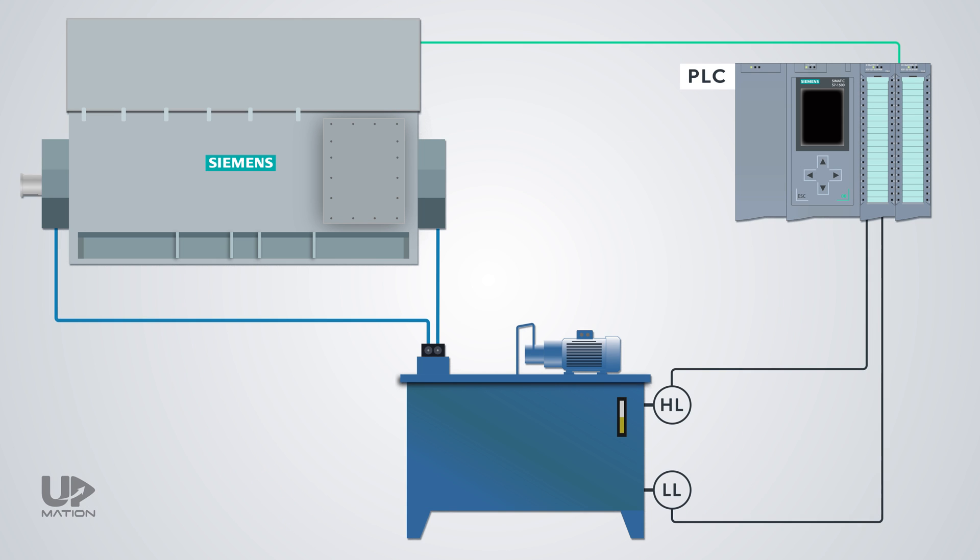As another example, consider this process in which the bearings of a 1 MW electric motor are being lubricated and cooled automatically. In this case, the normal level of the oil is between the low and high level switches.